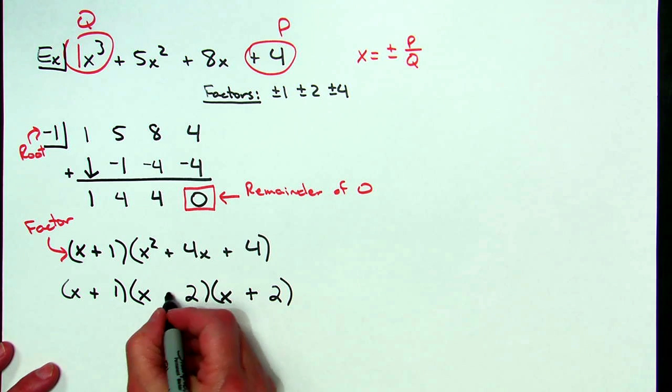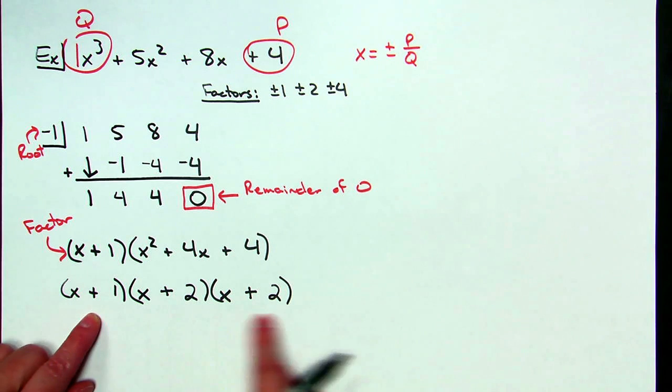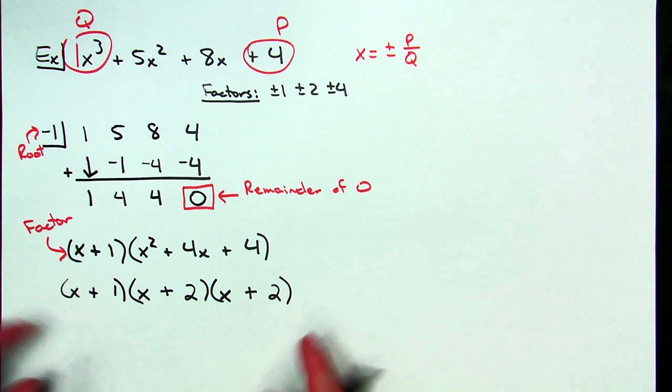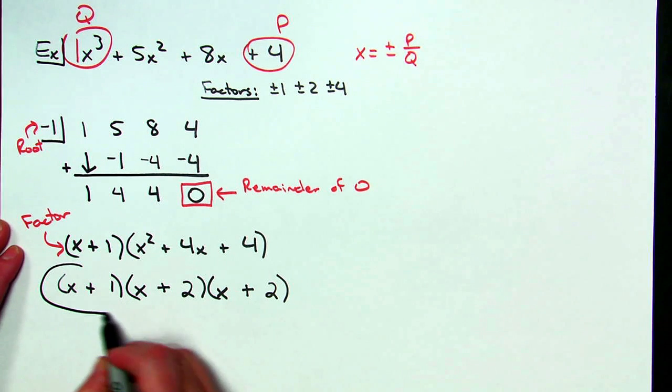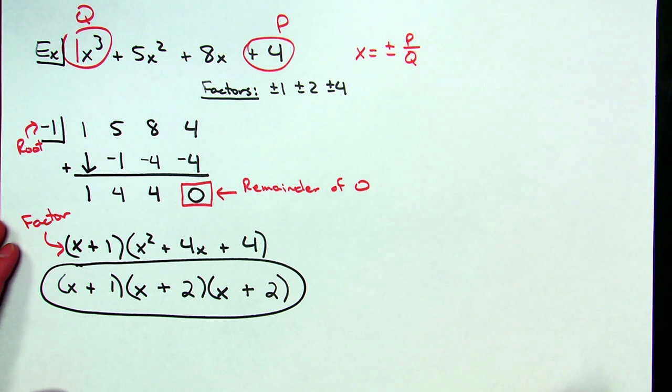That's going to make this be a positive, that's going to make this positive. Now I have completely factored this. I can no longer factor it anymore. This is my factored answer to my original polynomial expression.